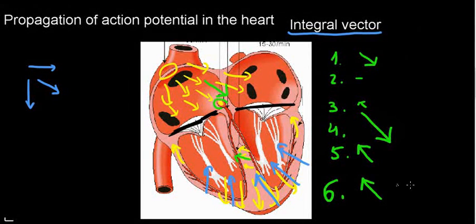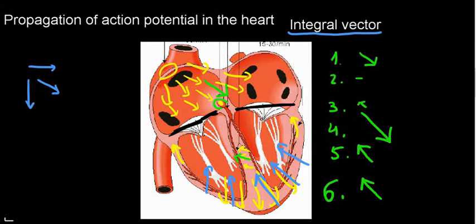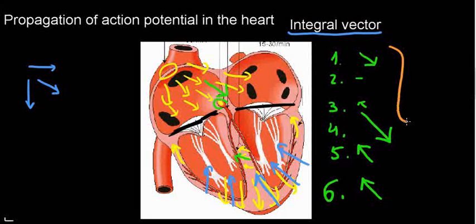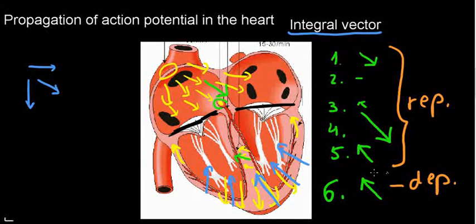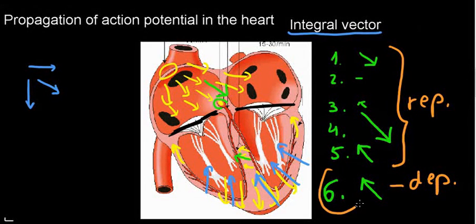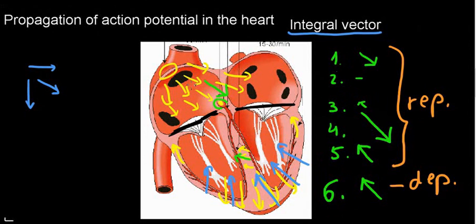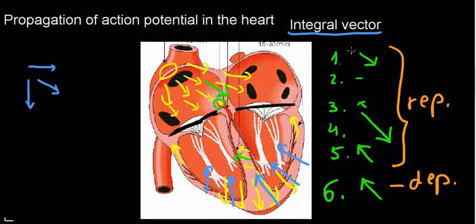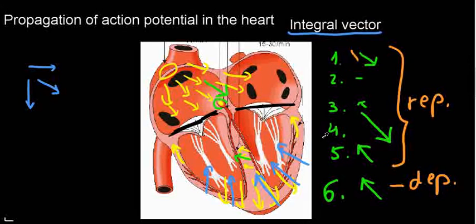This is going to be discussed later in the EKG curve — why this is slightly different. But as you can imagine, all of these are repolarizing waves, while this is a depolarizing wave. So this should clue you in that this would look very different on the curve itself. These are the integral vectors — the vectors that we add up — and these give us the direction of each electrical event that we're going to read.